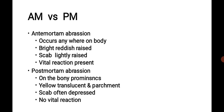Antemortem abrasion vs. postmortem abrasion: Antemortem abrasion occurs anywhere on the body; it is bright reddish and raised, the scab is lightly raised, and vital reaction is present. Postmortem abrasion appears on bony prominences; it is yellow, translucent, and parchment-like. The scab is often depressed and there is no vital reaction.